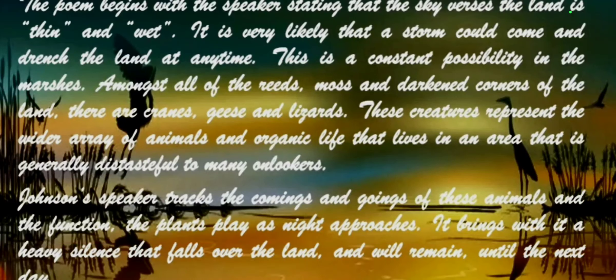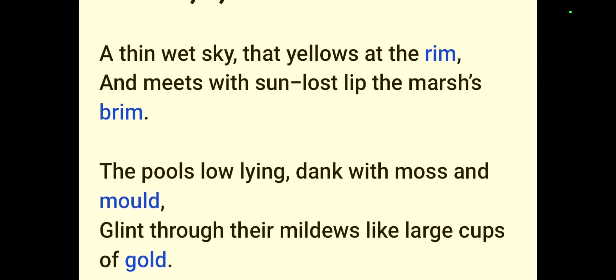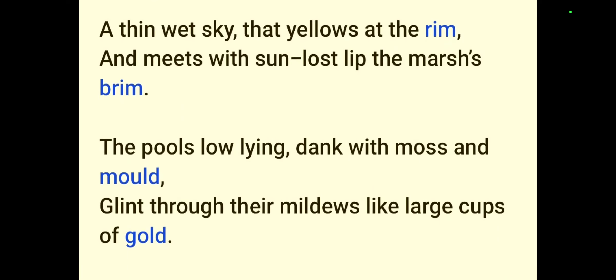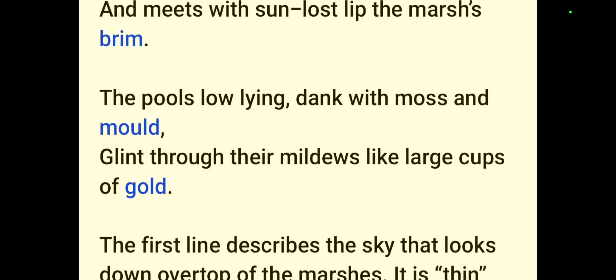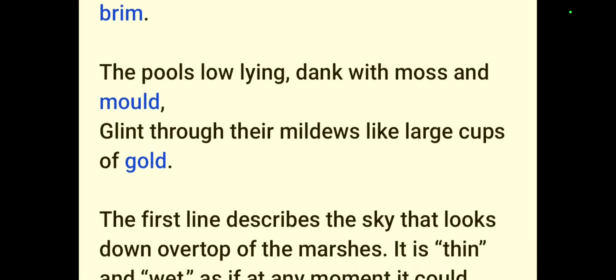Now, line-wise explanation. I am going to explain the first four lines. The meaning of marshlands, as I already told you, is swampland or slough — S-L-O-U-G-H is pronounced as 'slough.' The first four lines read: 'A thin wet sky that yellows at the rim and meets with sun-lost lip the marsh's brim. The pools, low-lying, dank with moss and mould, glint through their mildews like large cups of gold.'